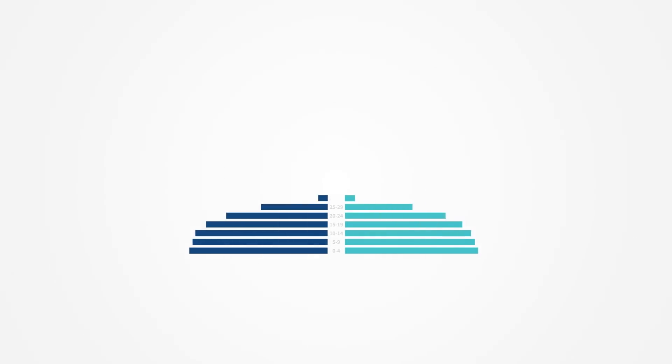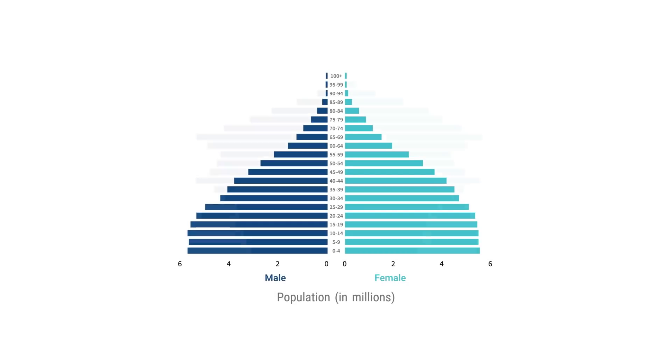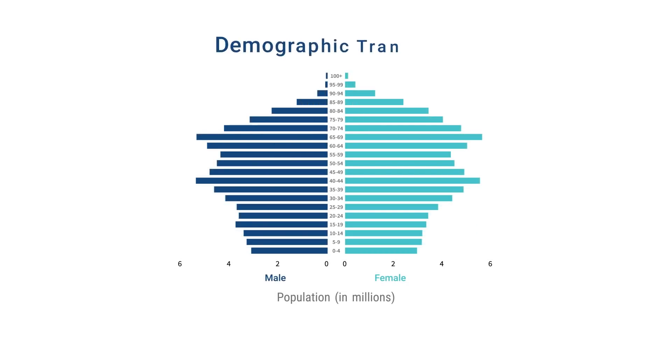We refer to this shift towards a population with a larger share of older adults as population aging. Age structure change occurs in the long-term shift from high to low mortality and fertility, also known as the demographic transition.